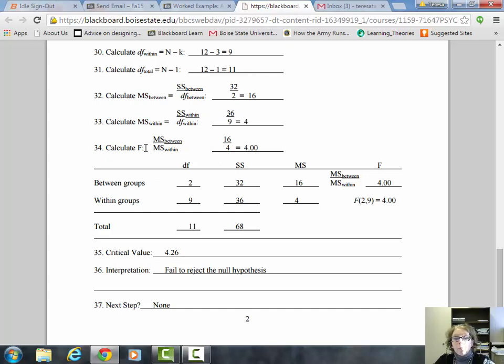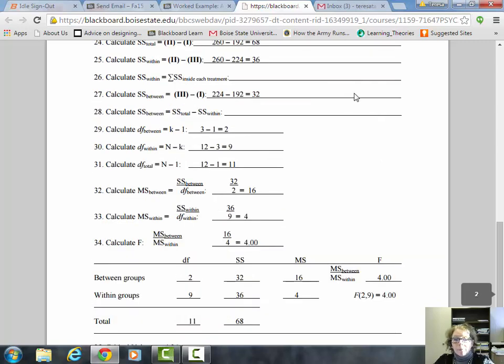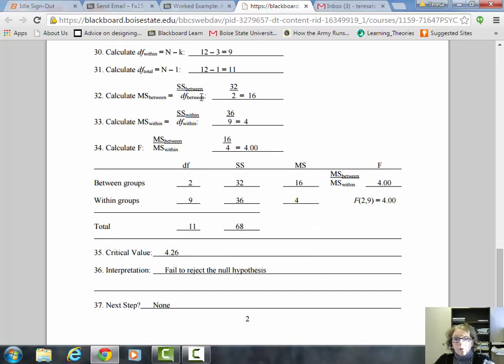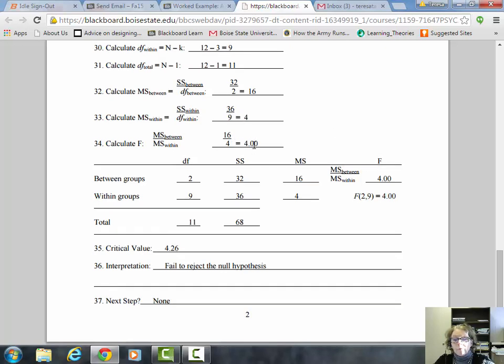We're almost ready to calculate our F statistic. We need to calculate MS between and MS within. We develop numbers in previous steps and roll them into the next steps. SS between of 32 divided by DF between of 2 gives MS between of 16. The same for MS within gives 4. Finally, MS between of 16 divided by MS within of 4 gives us our F value of 4.00.